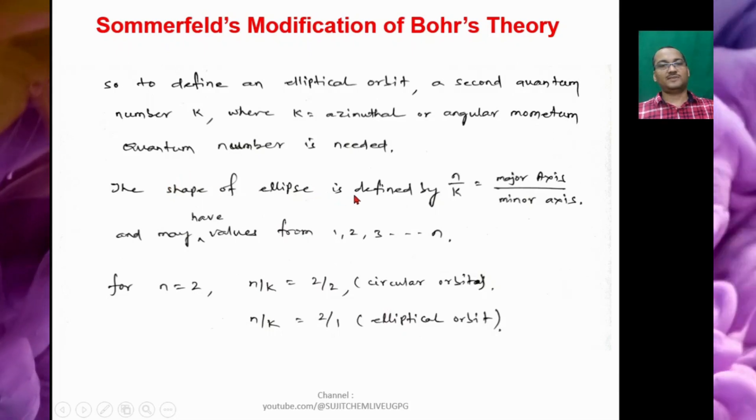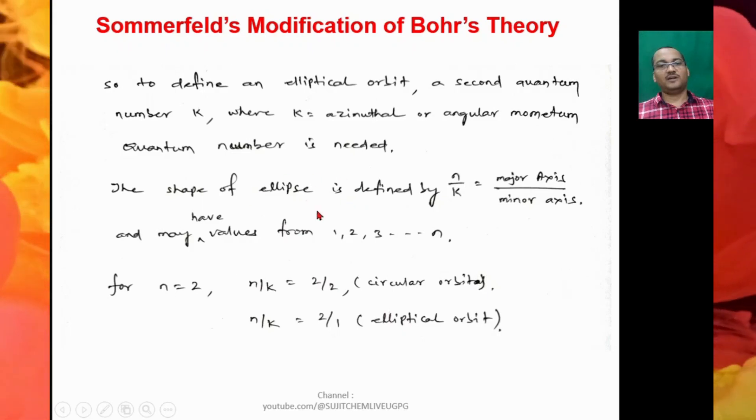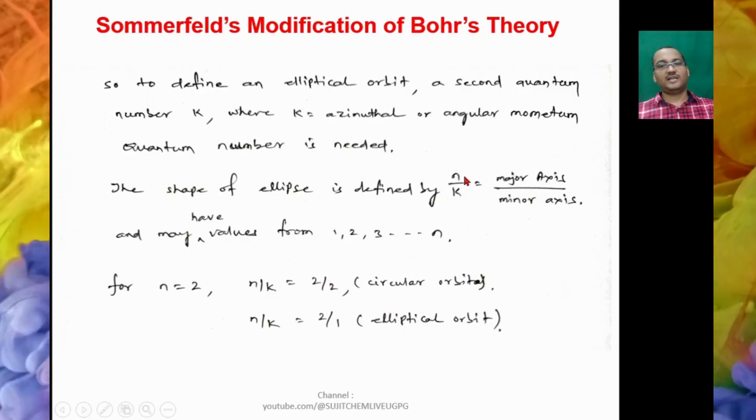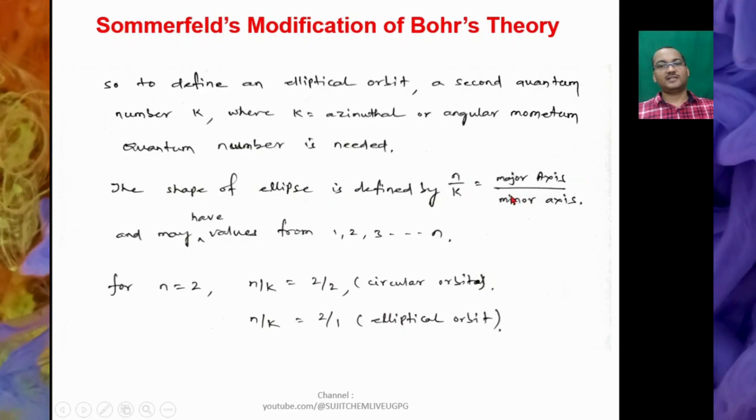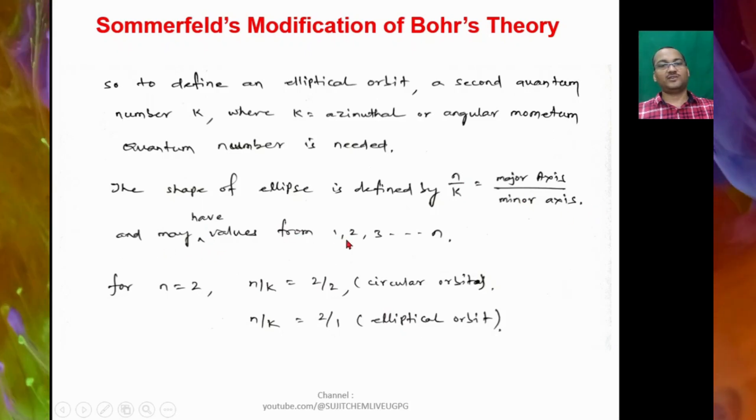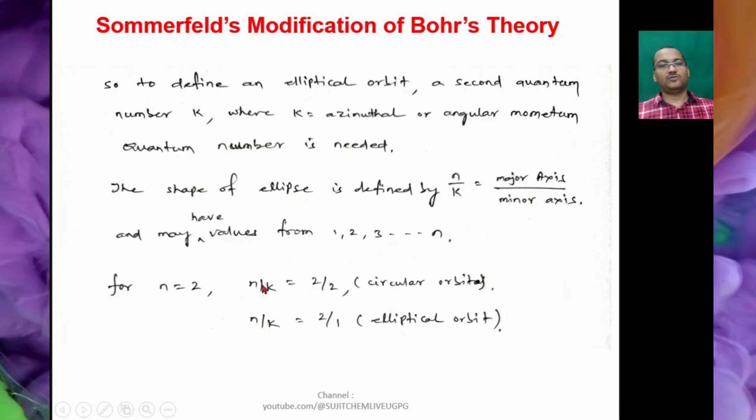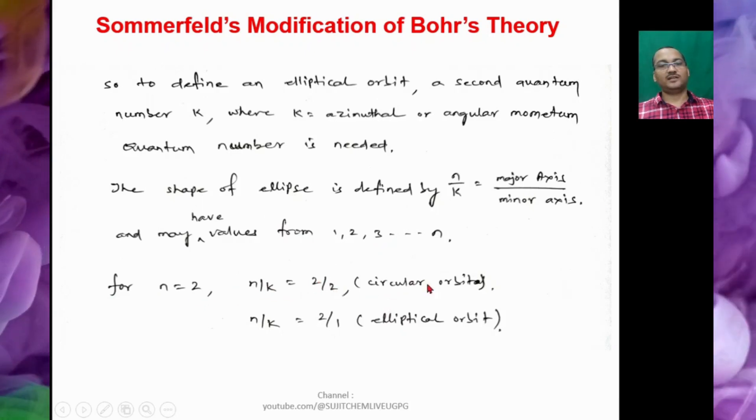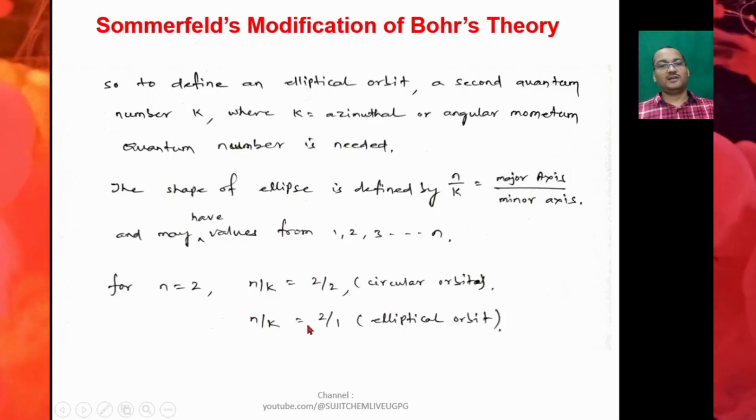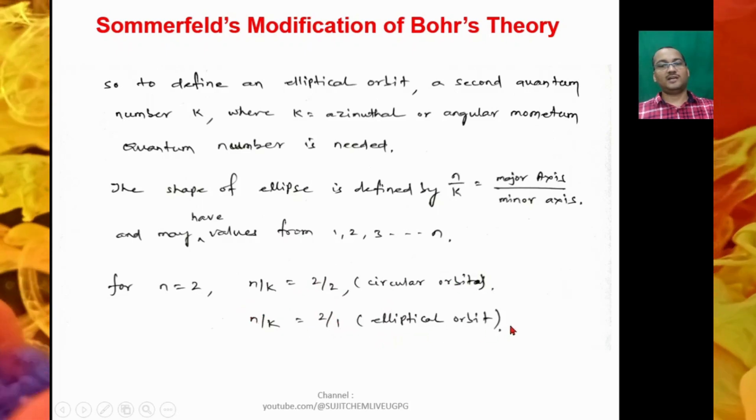So the shape of ellipse or elliptical orbit is defined by the ratio of N/K, that is major axis by minor axis, and it may have values from 1 to N. So for N = 2, N/K will be 2/2, that is circular orbit. N/K = 2/1, that is elliptical orbit.